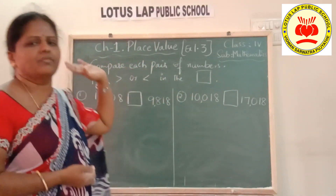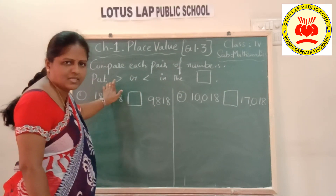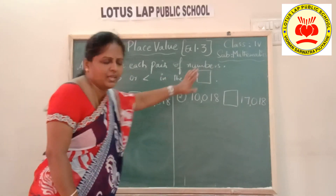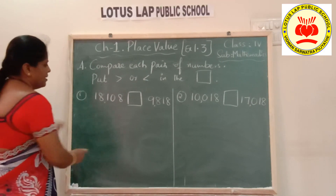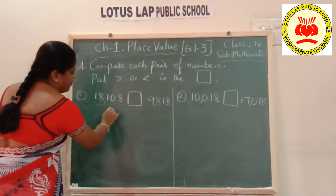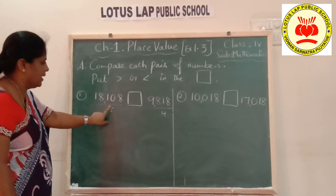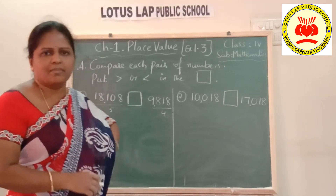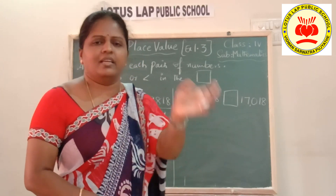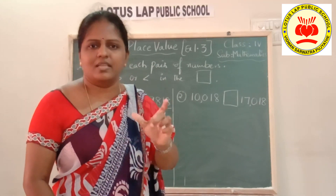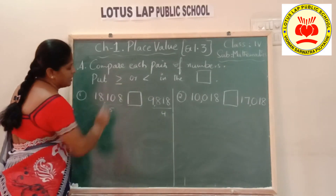Now, based on that, let's start exercise 1.3, comparison of numbers. Compare each pair of numbers and put the symbols — greater than or lesser than — in the box. Two numbers are given in the first question. Applying the first rule — count the number of digits — the first number has 1, 2, 3, 4, 5 digits, and the second number has 1, 2, 3, 4 digits. The first number is bigger, so first number is greater than second number and we put the greater than symbol.